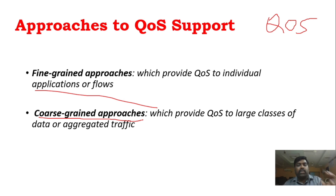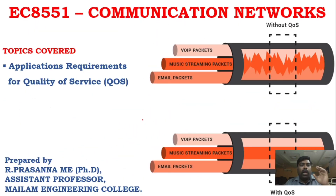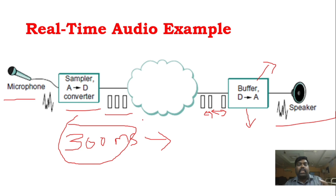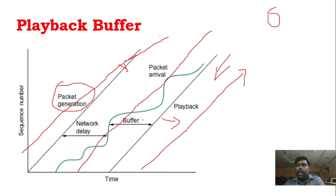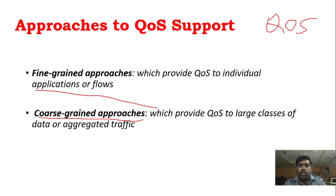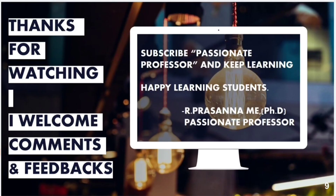So we have seen what quality of service is, a real-time audio example, the taxonomy of real-time applications, and the approaches to QoS support. All these are very important concepts, and with this, Unit 4 is completed. Thank you students for watching — subscribe to Passionate Professor and keep learning.